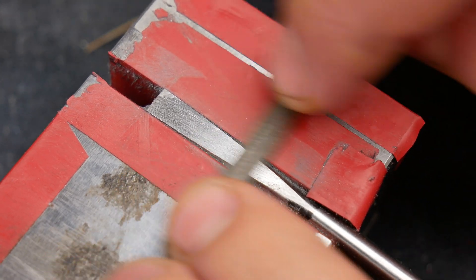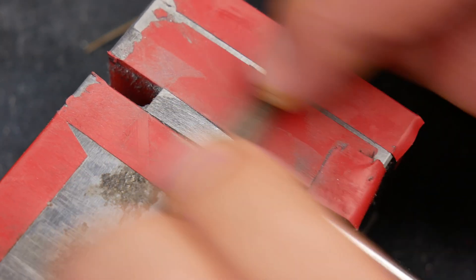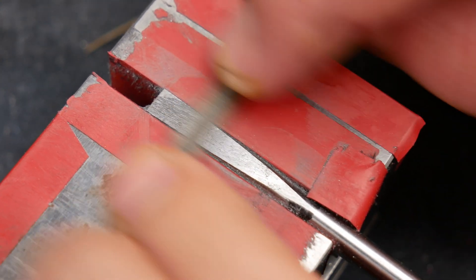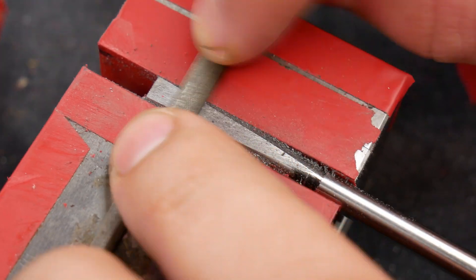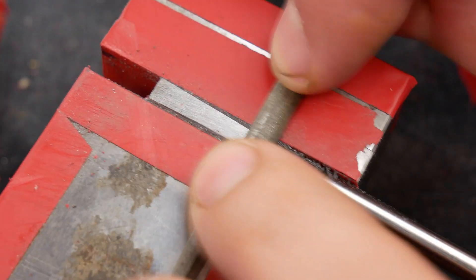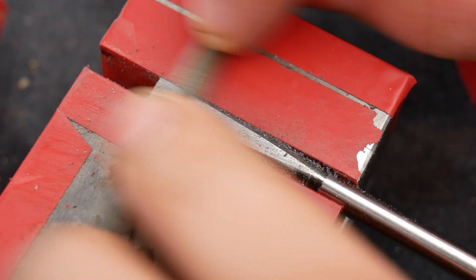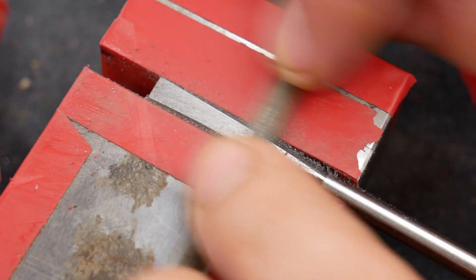So after getting the taper most of the way there, I moved on to draw filing. Draw filing is this movement I'm doing here. A constant light pressure back and forth. This technique will give us smooth square edges and nice straight file marks that will be easier to take out later.